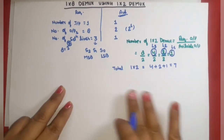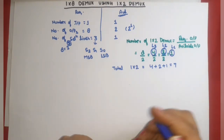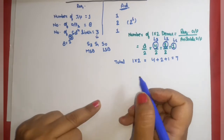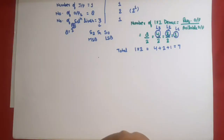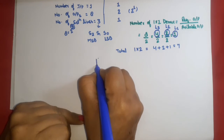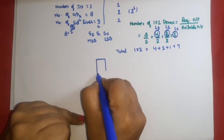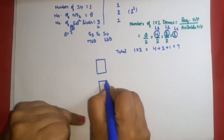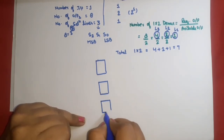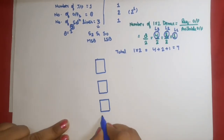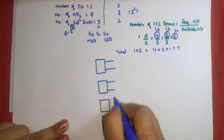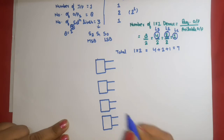So 7 are required in total. Now we know the total count, so let's make the connections. At label 3, there will be 4 demuxes — demux 1, 2, 3, and 4. Each has 2 outputs.